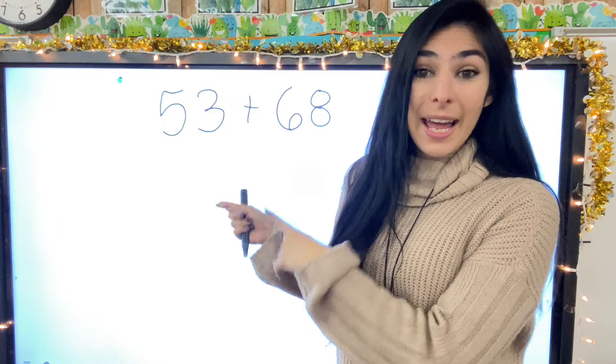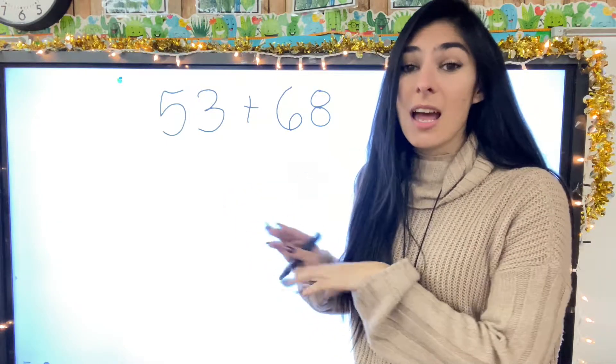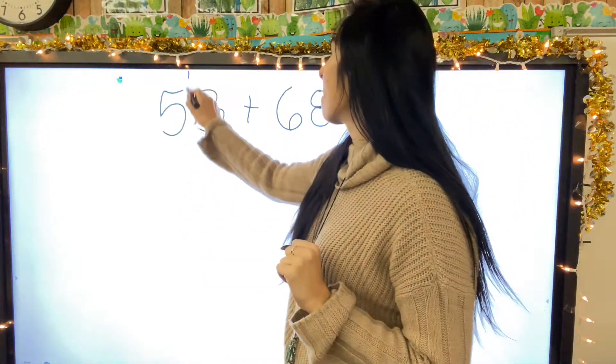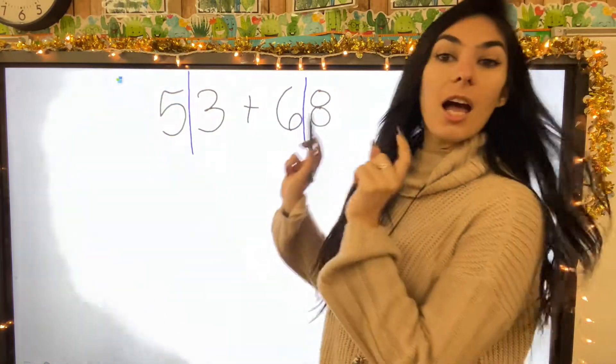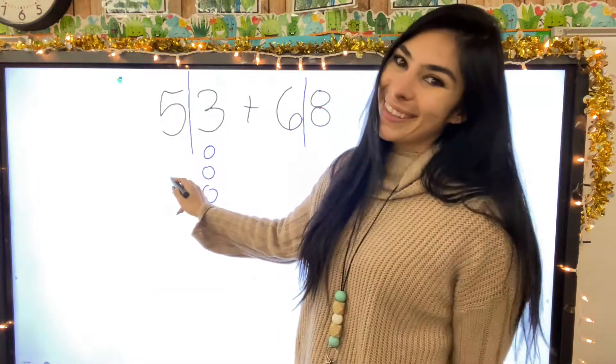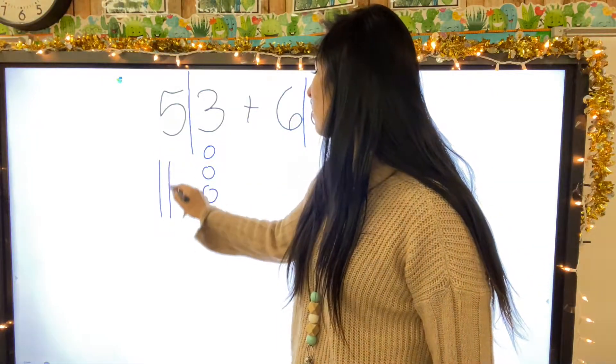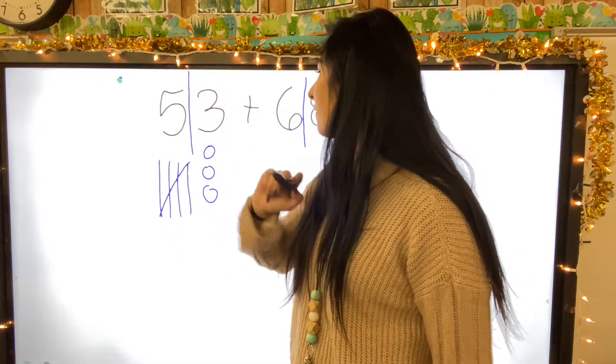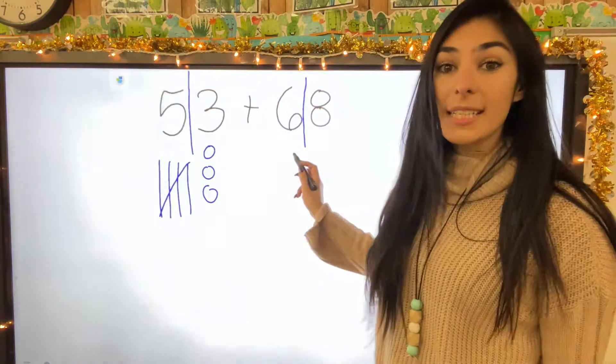Okay, next one I have 53 plus 68. I'm going to draw them out. So first let's chop. How many ones do I have? One, two, three. Tens? Ten, twenty, thirty, forty, fifty. Over to sixty-eight.